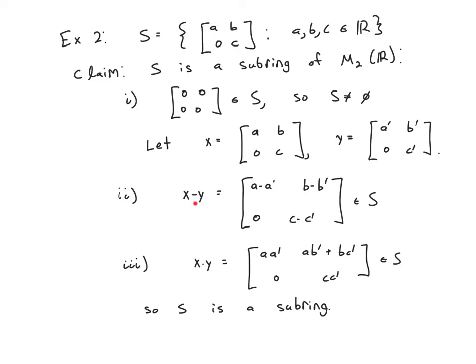Now we need to check closure under subtraction and multiplication. Here I'm going to use the trick I had observed from the previous proof, which is that it makes more sense to just pick two elements and then show the difference and product of those two are both in S so that you only have to write this sentence down once. So let X be in S, which means X is of this form. Let Y be in S. Y is of this form.